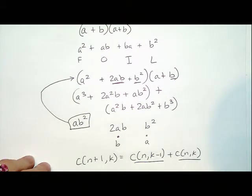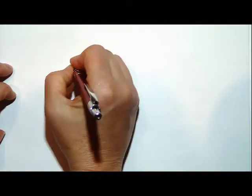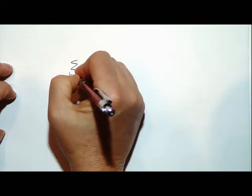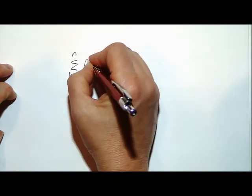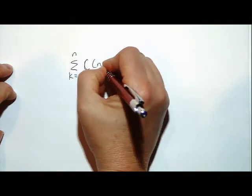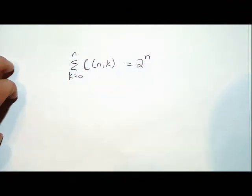There's another interesting thing with combinations: the sum of all C(n,k) from k=0 to n equals 2^n.